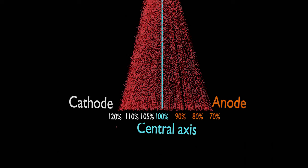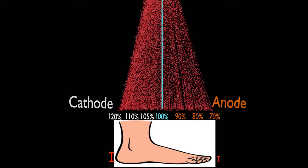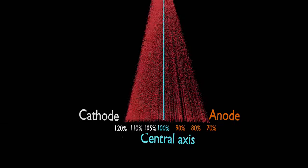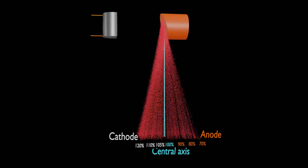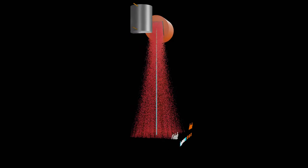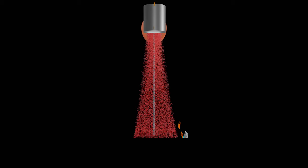This variation of x-ray intensity across anode-cathode direction is similar to heel in your foot, and named as heel effect. Heel effect is not observed perpendicular to anode-cathode direction.